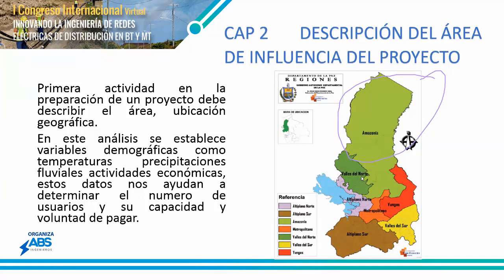Then we have the Valles — there is a part that is Valles — both north and south of the department. We also have the Yungas. This region of my department is very peculiar because the terrain is very rugged. Due to these considerations, we have to use tension structures, which increase the cost of the budget because tension structures are much more expensive than simple poles.